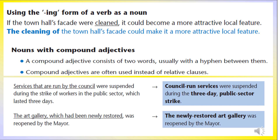Now, compound adjectives. A compound adjective consists of two words, usually with a hyphen between them. Compound adjectives are often used instead of relative clauses — without using relative clauses, we can use compound adjectives. Look at this example.